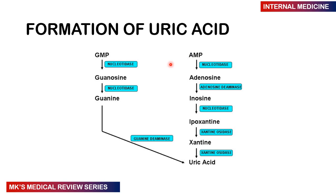These nucleotides are going to be broken down by nucleotidase, releasing guanosine, which is then broken down to guanine and eventually deaminated into uric acid. On the other hand, AMP (adenosine monophosphate) is converted to adenosine, then by adenosine deaminase to inosine, then hypoxanthine, and after that converted by xanthine oxidase into xanthine. Xanthine oxidase is a very important enzyme because we can give drugs that target it. The xanthine is then converted to uric acid.